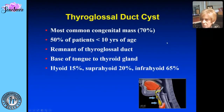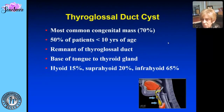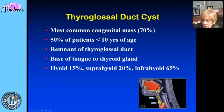The thyroglossal duct cyst is the most common congenital neck lesion — not the most common lesion overall (that would be lymphadenopathy), but among congenital lesions it accounts for about 70 percent. Half of patients present in the first decade of life, though it can be seen throughout life. It is a remnant of the thyroglossal duct, which extends from the base of the tongue to the thyroid.